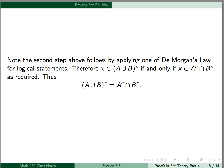As mentioned, one step above follows by applying one of De Morgan's laws for logical statements. Combining our results, we can conclude that x is an element of the complement of A union B if and only if x is an element of A complement intersect B complement, which is what we needed to show. Therefore, A union B complement is equal to A complement intersect B complement.